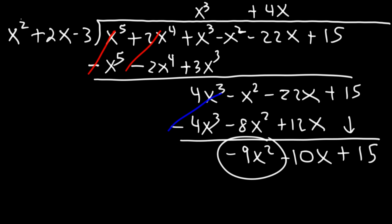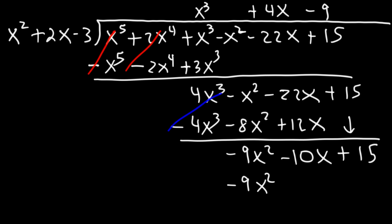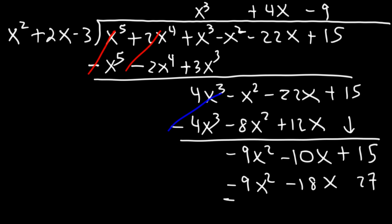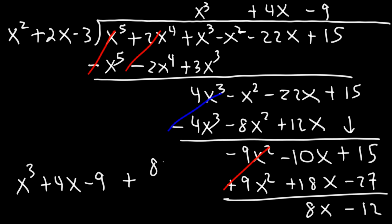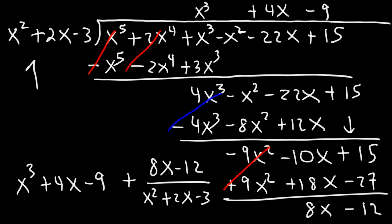Divide negative 9x squared by x squared, which gives negative 9. Multiply: negative 9 times x squared is negative 9x squared, negative 9 times 2x is negative 18x, and negative 9 times negative 3 is positive 27. Change signs to subtract — those cancel. Negative 10x plus 18x is 8x, and 15 minus 27 is negative 12. So the answer is x cubed plus 4x minus 9, plus the remainder 8x minus 12 over x squared plus 2x minus 3.